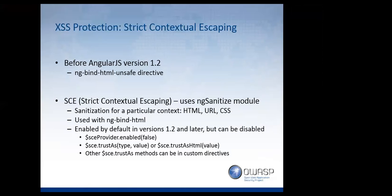Once Angular 1.2 came along, strict contextual escaping provided HTML sanitization and is contextually aware — you can define it for HTML, CSS, URL, and so on. When using ng-bind-html to display HTML to the view, it only works with SCE trust-as-HTML. But developers tend to use or create custom directives using SCE trust-as-CSS, URL, and so on, which can introduce vulnerabilities. In the configuration there's the SCE provider — if you ever see this turned off, it's a huge red flag and you should create a Jira ticket, because anything added to ng-bind-html will display HTML markup with no sanitization.